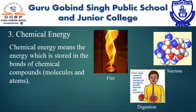The next source is chemical energy. Chemical energy means the energy which is stored in the bonds of chemical compounds — that is, in molecules and atoms. Mostly, when chemical energy is released from a substance, it is transformed into a new substance completely. Some sources of chemical energy include wood, which is an easily available source; coal, which is the most basic source; photosynthesis; and electrolysis.